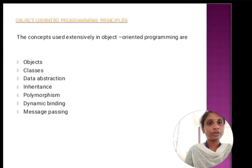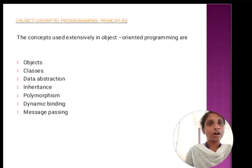First, we are going to discuss about object-oriented programming principles. There are 8 principles in the OOP concept. The concepts used extensively in object-oriented programs are objects, classes, data abstraction and encapsulation, inheritance, polymorphism, dynamic binding, and message passing. These are the 8 concepts we are using in object-oriented programming language.